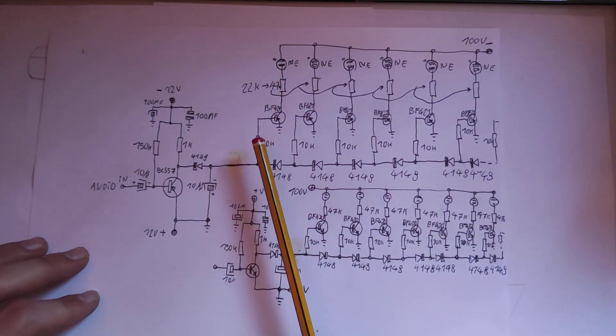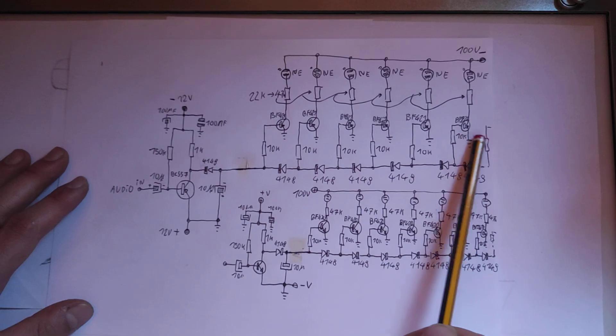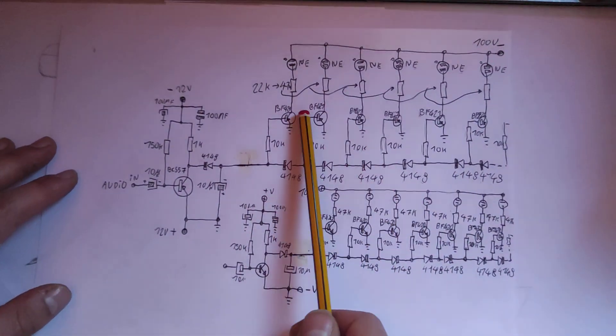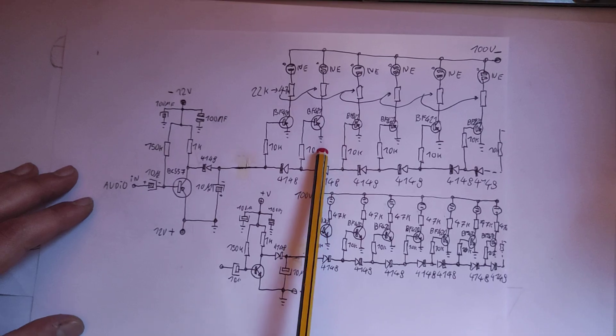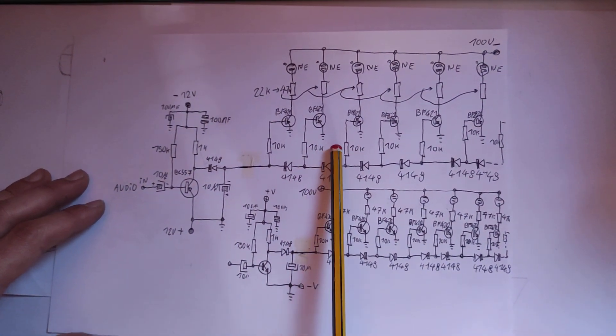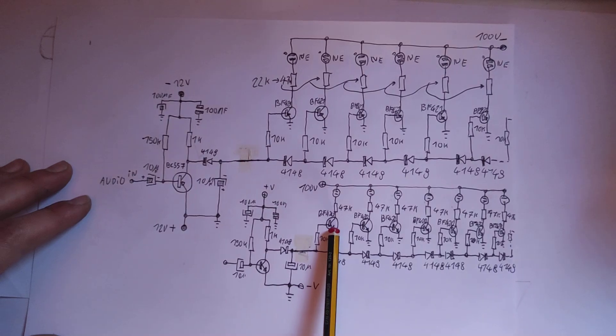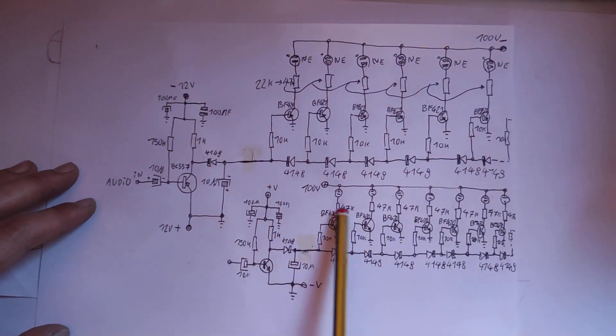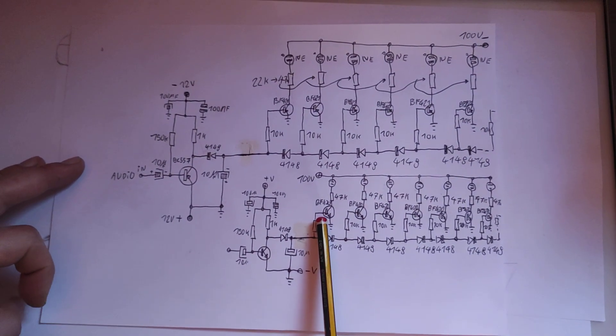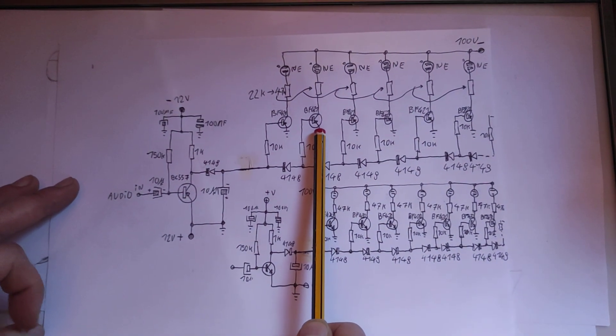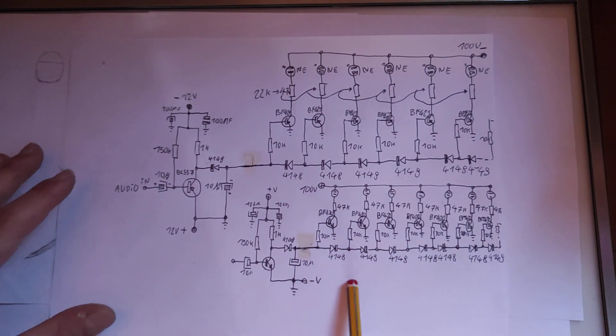And where do you get these transistors? Well, you get them out of old electron gun amplifiers. That's where I get these all the time. From modern TVs, you will get an integrated circuit, which is kind of useless. But yeah, in older TVs, you will find these discrete. And you can sometimes find the pair of these two, because these are complementary transistors. The NPN construction is the BF420. And the P version is the BF421.